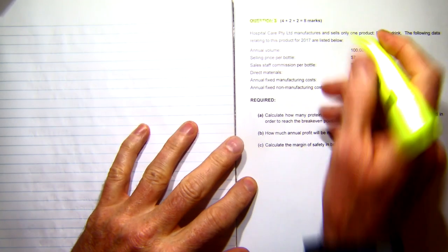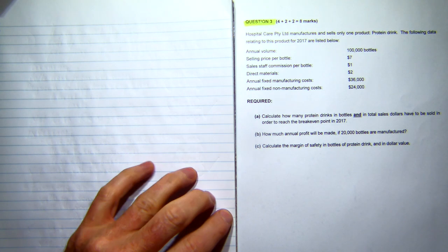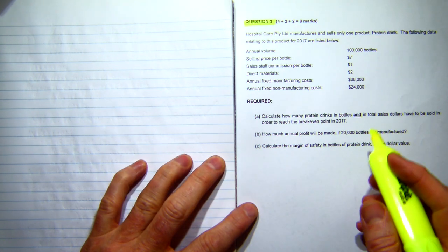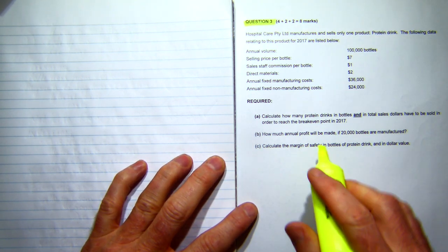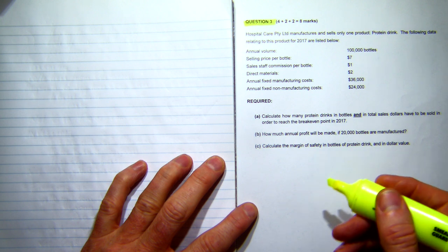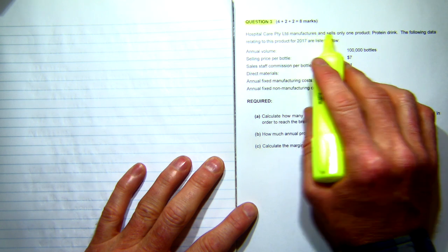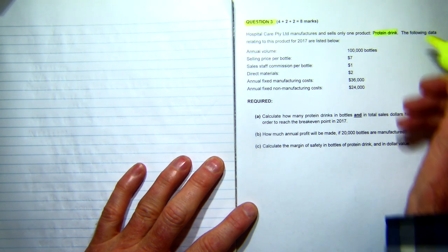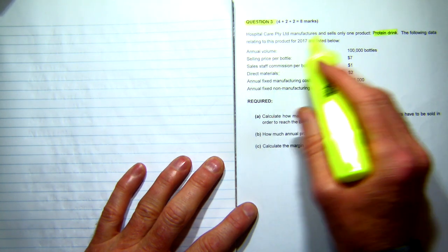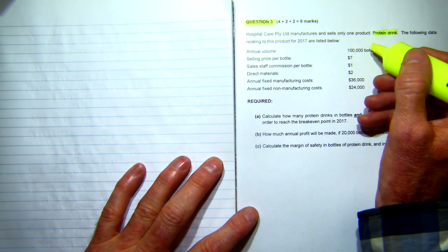Alright, we're looking at question number three, which is on the exam paper, and this is a cost volume profit question. So we're talking about break-evens, we're talking about margins of safety and so on. We've got HospitalCare Proprietary Limited manufactures and sells one product, which is a protein drink. The following data relates to the 2017 are listed below.